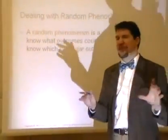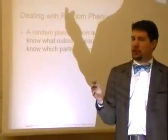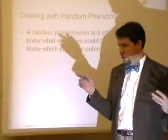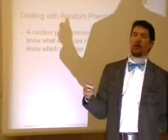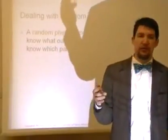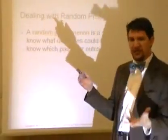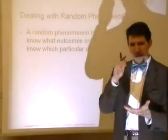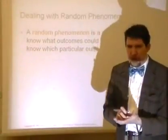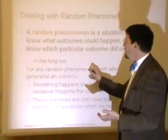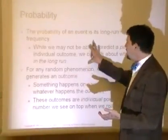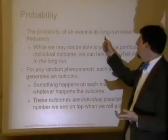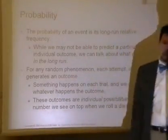Be careful — randomness doesn't mean anything can happen. If I roll a die, I wouldn't say 'egg' as a possible outcome. You have to have a known population of what could happen, and probability based off that is termed 'long-run relative frequency.'